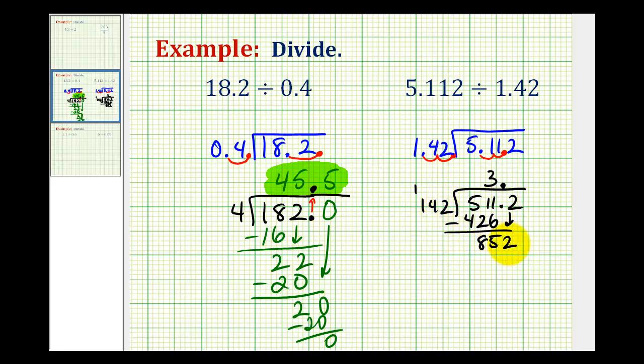And now we need to determine how many 142's there are in 852. Again, not an easy question. Let's try 6. 6 times 2 is 12. Carry a 1. 6 times 4 is 24 plus 1. That's 25. Carry a 2.